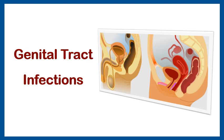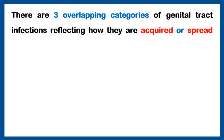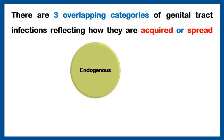Genital tract infections. There are three ways of catching sexually transmitted infections: either endogenous, exogenous, or iatrogenic. The endogenous way is when some of the normal flora of the vagina, which are present in small numbers — like Candida or Gardnerella vaginalis — might increase in number due to any decrease in immunity, continuous use of antibiotics, or any other cause, making the organism overgrow and cause infection.